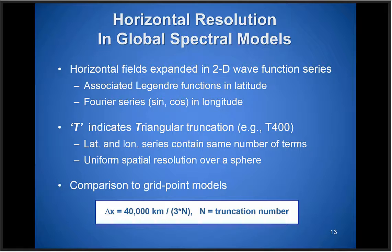Let's talk about horizontal resolution for global spectral models. The spectral models are run with Fourier series of Lagrange functions in latitude and longitude. Most global spectral models now use triangular truncation — you'll see a T-number like T400 — where the latitude and longitude series contain the same number of terms, giving uniform spatial resolution over a sphere. A rough estimate of comparable grid-point resolution is 40,000 divided by three times the truncation number. For a T400 model, that gives about 33 kilometers grid resolution.